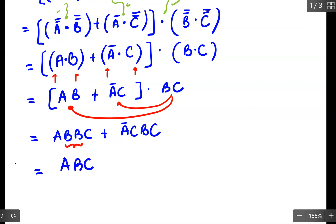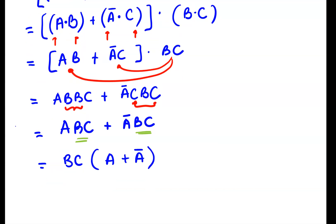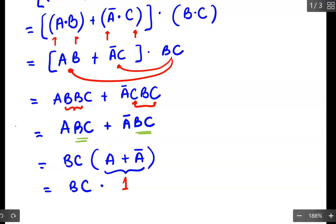Note that B dot B is just B, so we get A·B·C. Also C·C is just C, giving A-complement·B·C. The next step is to realize that you have a common factor of B·C. Factor B·C out, and in the brackets you are left with A plus A-inverted. From page 21, A plus A-inverted equals 1. So B·C times 1 gives B·C as the final answer.